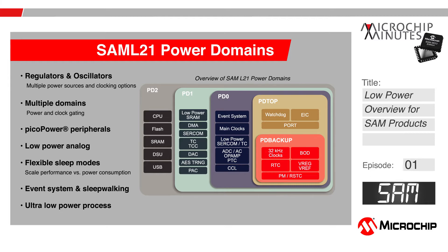The last topic I will cover is sleepwalking and the event system. Both of these are core-independent peripherals, which basically means that you can operate without the CPU's intervention. The event system allows one peripheral to signal another peripheral — for example, after a timer counter times out, you might want to do an ADC measurement. Sleepwalking is where the peripheral stays in the retention mode, and when an event occurs, the peripheral will request a clock and verify if an event requires the attention of the CPU.